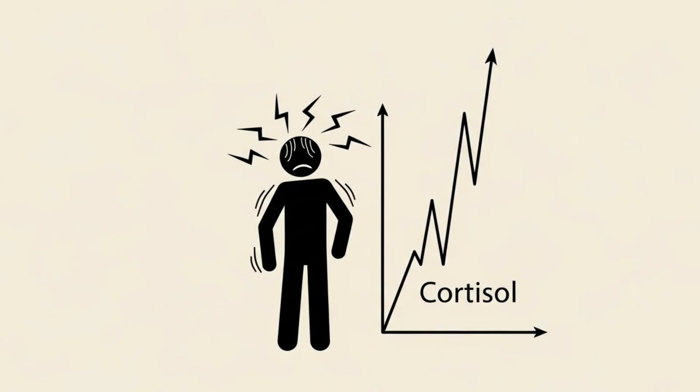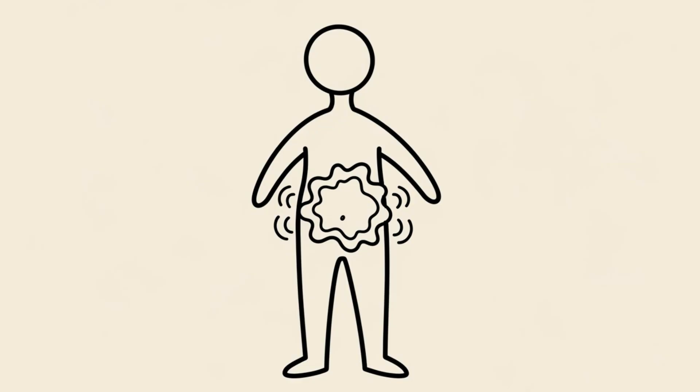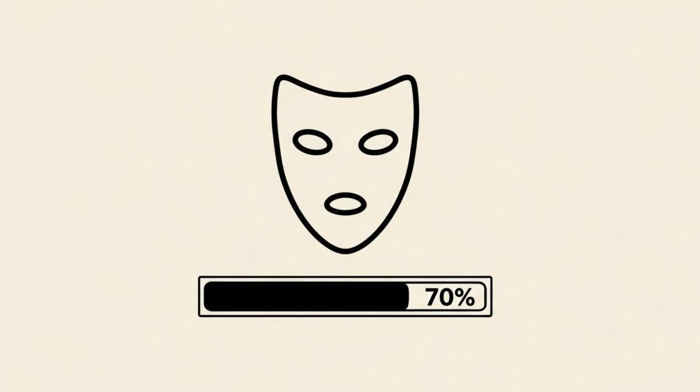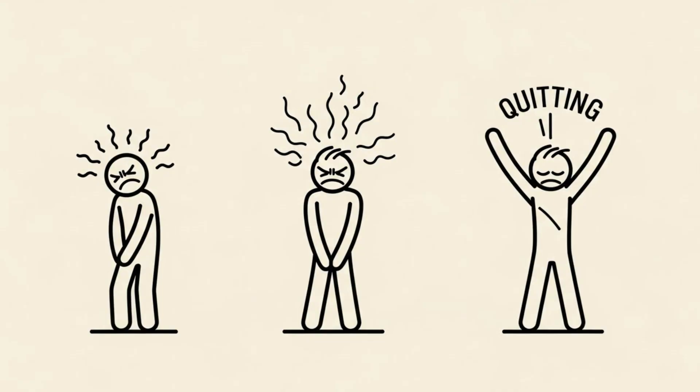Similarly, chronic stress raises cortisol. Chronically high cortisol leads to water retention and abdominal fat storage. It masks your progress. You might be losing fat, but the water retention from stress makes the scale look stuck. This leads to frustration, which leads to quitting.